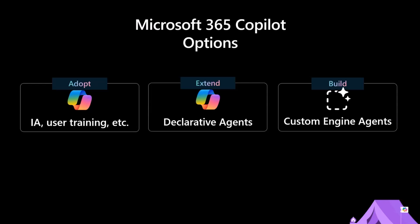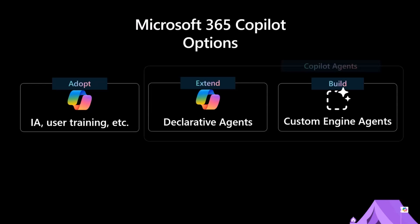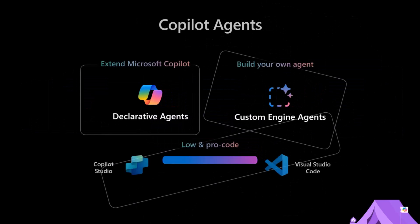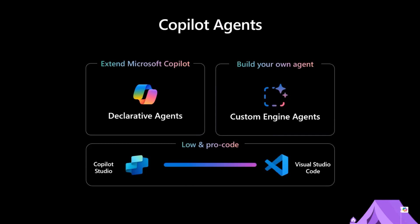If you want to build agents, you've got two choices: declarative agents or custom engine agents. The goal of today's presentation is to show you the difference between those. Next week we'll go deeper on declarative agents, and the week after that, Aicha is going to do a deep dive on custom engine agents. So what is this, what's the difference, and how does it relate to you as a developer?